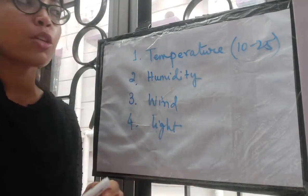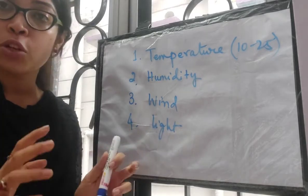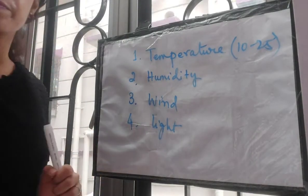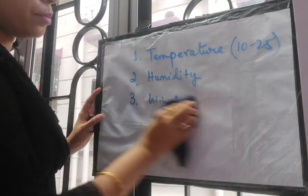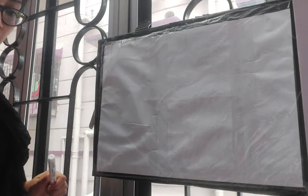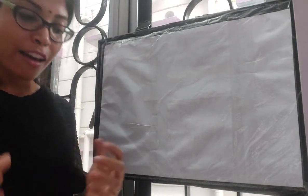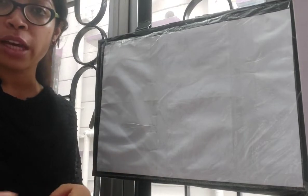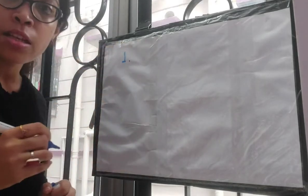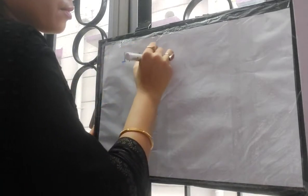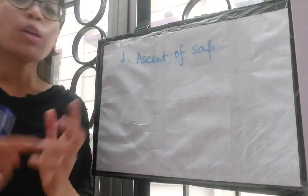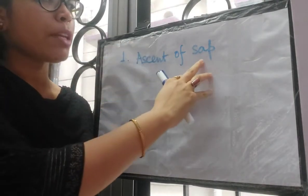So these are the four factors you need to learn and how they affect the rate of transpiration. I hope you have understood. Next, moving on to the significance of transpiration. In significance, we have both the beneficial role and the harmful role. We are going to do the beneficial role of transpiration first — how transpiration benefits the plant. The first one is ascent of sap.